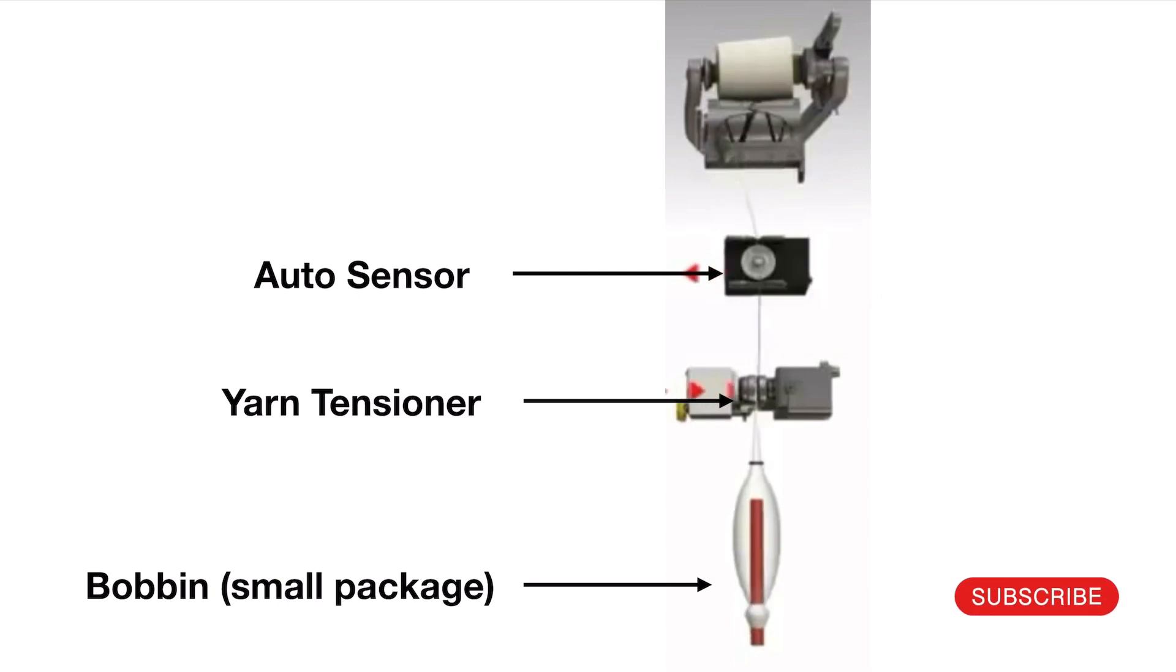Also this sensor may detect yarn faults like thick and thin places, knots, etc. and helps correct it. Winding drum carries out the winding motions to wind the yarn on the larger package, mostly the cone or large package.